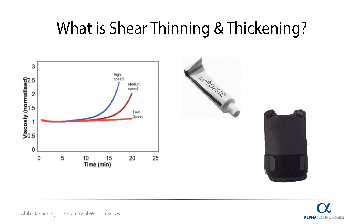When set in the context of process design, you can see how it is important to know this type of information about a material. For example, if a shear thinning material were mixed at too high a rate, it could become difficult to mold or hold a structure. Or if a shear thickening material is mixed too aggressively, it could be extremely wasteful in terms of energy and even disrupt a process by becoming too viscous to flow properly. This concept of shear thickening and thinning is just one of several examples as to why it is so useful to test material at multiple speeds.